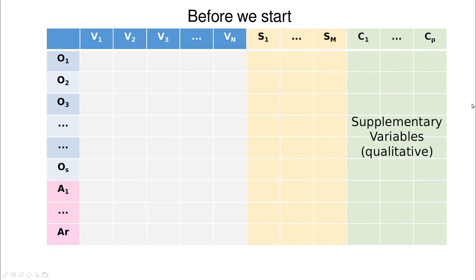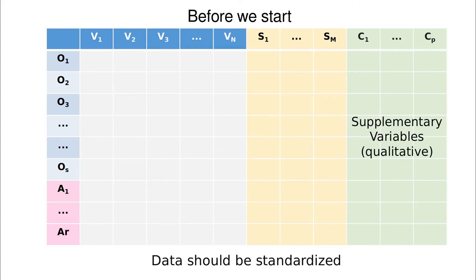Finally, we're going to leave apart some qualitative variables, for a couple of reasons. The first is that PCA only works for quantitative variables. But also, factors or categorical variables are interesting for exploring different dimensions of the data. And don't forget our mantra: data should be standardized.